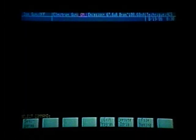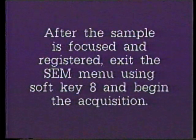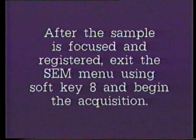Before we actually acquire the survey scans, we should go back to the TV image to make sure it is in focus and that we have proper registration with the mark on the TV screen. We'll enter the SEM menu, which allows us to access image shift using function key number 3. Using the arrows, we can shift the sample back into proper position with the registration mark. Once lined up, we can also use the fine focus to ensure the best focus possible. Now that the sample is focused and registered, we can exit the SEM menu using soft key number 8 and begin our acquisition.